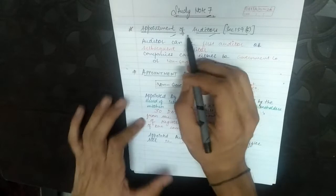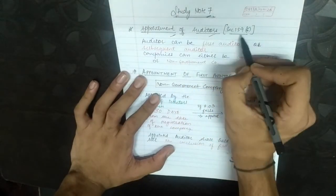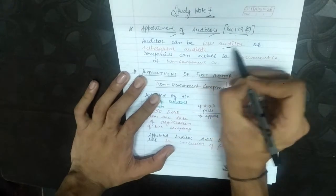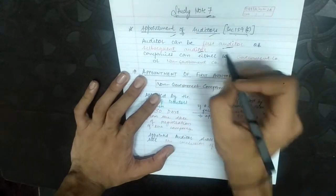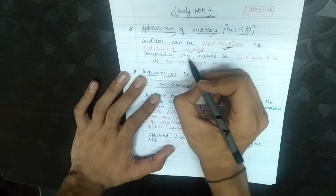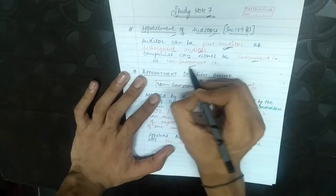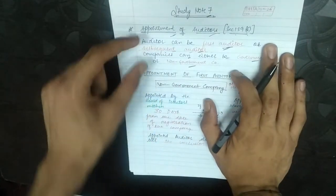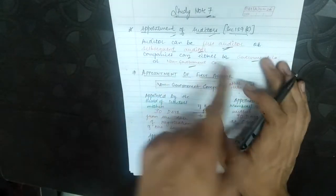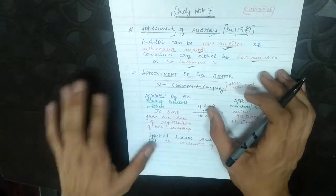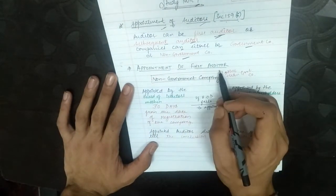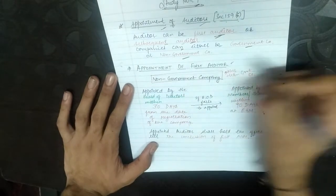Starting with appointment of auditors under Section 139 subsection 6. An auditor can be a first auditor or a subsequent auditor. Companies can either be a government company or a non-government company. Let us start with appointment of the first auditor in case of a non-government company.